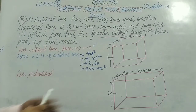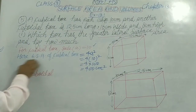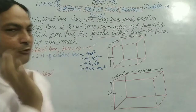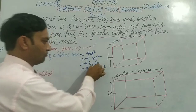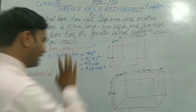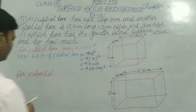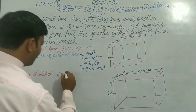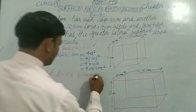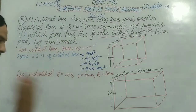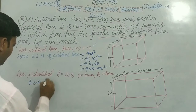First, we need to find the lateral surface area of both boxes. For the cubical box, LSA = 4a² = 4 × 10² = 4 × 100 = 400 cm square. Now for the cuboid box, L = 12.5, B = 10, H = 8 cm. LSA of cuboid = 2(L + B) × H.